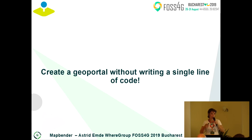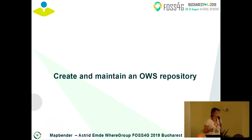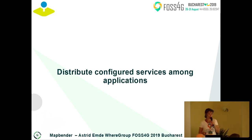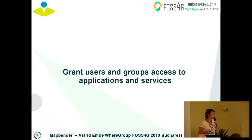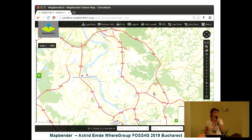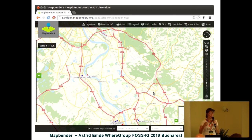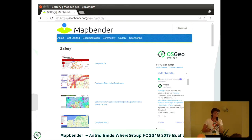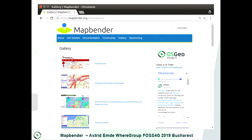There are a lot of WebGIS clients around, and we offer a toolbox with MapBender that helps you create individual applications to solve your needs. We create and maintain OWS repositories for your services, distribute configured services among applications, and allow you to create users and groups and grant them access to applications and services. We have a gallery in the MapBender project where you can find MapBender solutions.